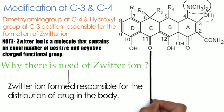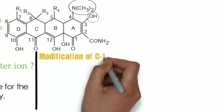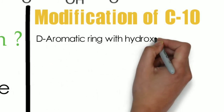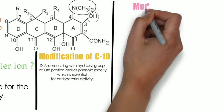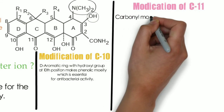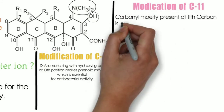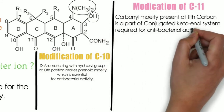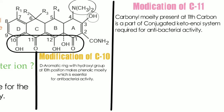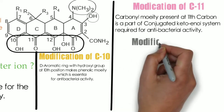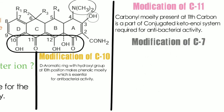At carbon 10 in the aromatic D ring, a hydroxyl group is present, making a phenolic moiety, which is essential for antibacterial activity. At carbon 11, a carbonyl moiety is present, which is part of a conjugated keto-enol system required for antibacterial activity. Positions 10, 11, 12, and 1 together form a keto-enol system. If we substitute the keto group at position 11 with any other group, it will disturb the keto-enol system and lead to loss of activity.